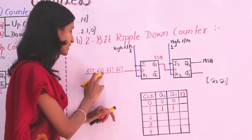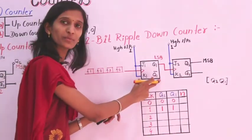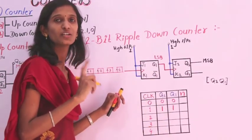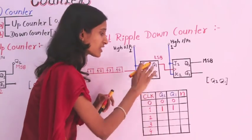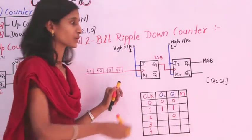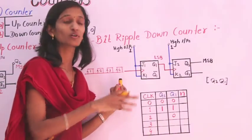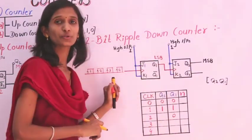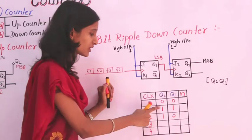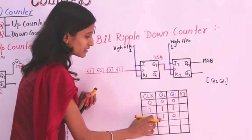For the second clock pulse applied to the first flip-flop, Q1 was previously in state 1, so it gets toggled and becomes 0. This 0 is connected to the second flip-flop as its clock input. Since the clock to the second flip-flop is 0, it does not trigger and remains in its previous condition of 1. So Q2 stays at 1.